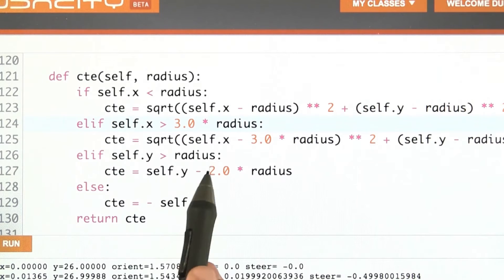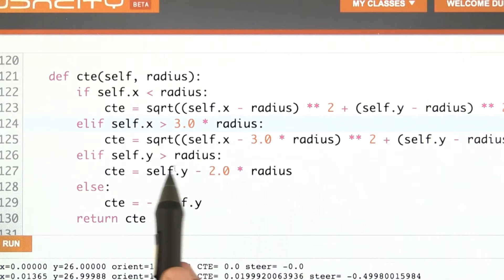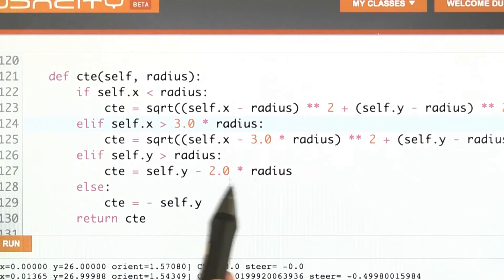Interesting are the straightaways. If my y value is large, I'm in the upper part of the diagram—in fact, larger than the radius. Then my cross-track error is the y-coordinate minus two times the radius, which is the height of the racetrack.